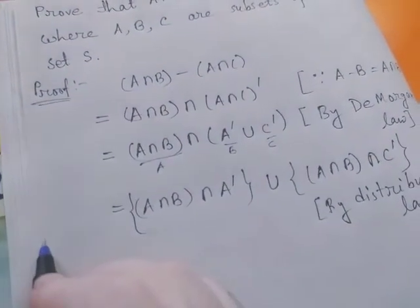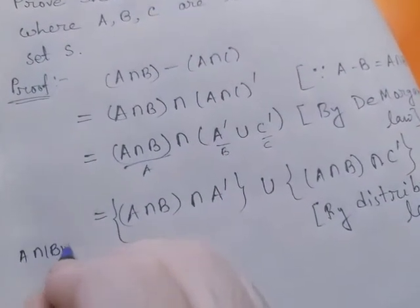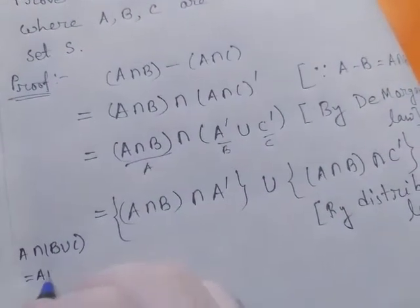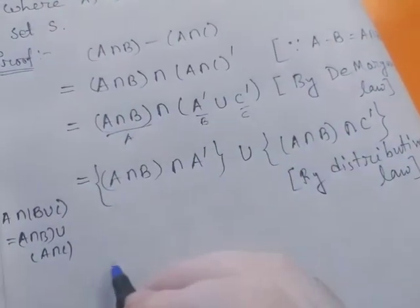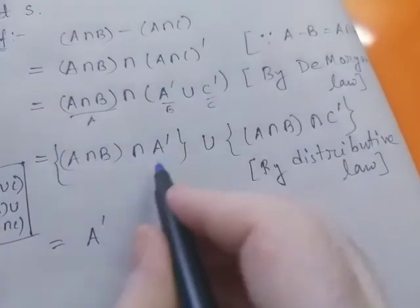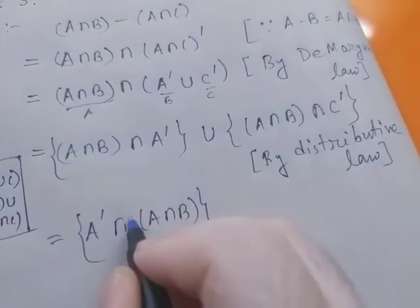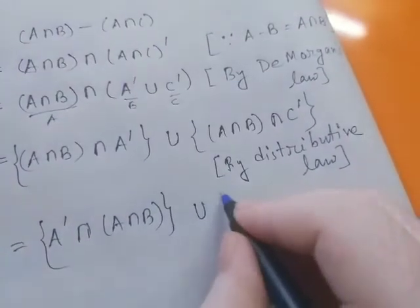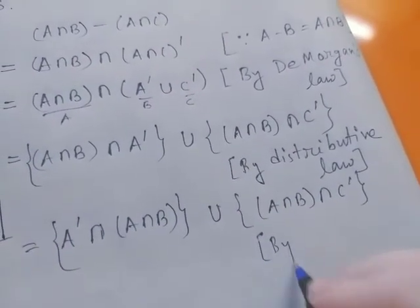We write this as (A complement intersection A) intersection B, using the commutative law, and this will remain as A intersection B intersection C complement, by the commutative law.